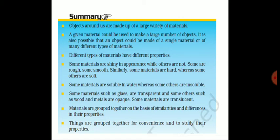Remember our hand — it is translucent. Transparent objects include candy containers at a grocery store. Cardboard, metals, and wood are opaque. So if you use a transparent glass container, you can see the candies inside the shop, but if you use a wooden or metal box, you can't see inside. Materials are grouped on the basis of similarities and differences in their properties, and things are grouped together for convenience and to study their properties.